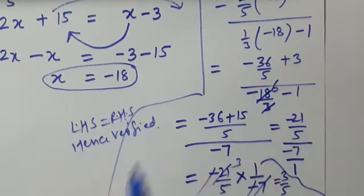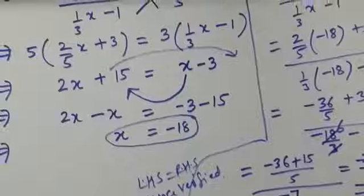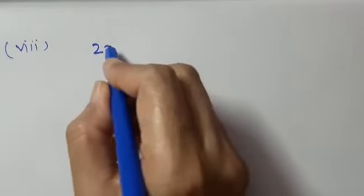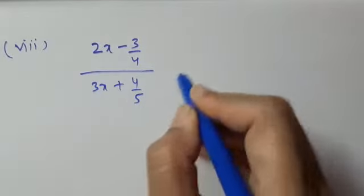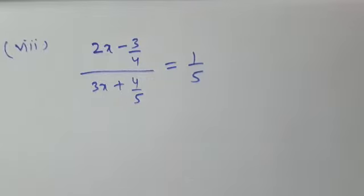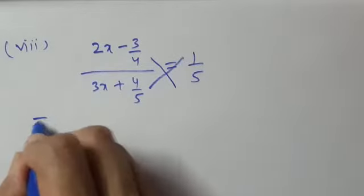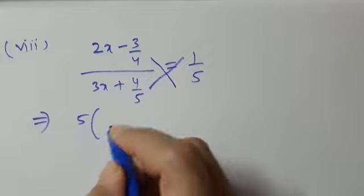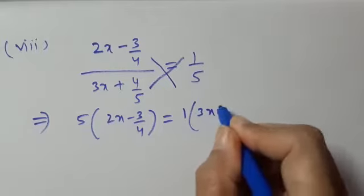I hope that is clear. Now let us do the 8th part, which is very similar to what we just did. The 8th part asks us to solve: 2x minus 3 upon 4, divided by 3x plus 4 upon 5, equals 1 upon 5. Do it step-wise. The first step is cross multiplication: 5 into 2x minus 3 upon 4, equals 1 into 3x plus 4 upon 5.